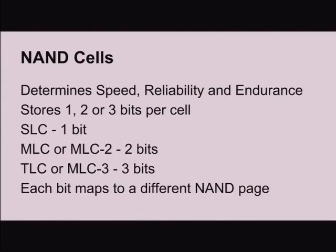NAND cells weren't on the hierarchy chart because you can store one, two, or three bits of data per cell. You might think those bits are all contiguous in the same page, but NAND storage vendors prefer to program all the bits for the first page first, then all the bits for the second page, and so on. So they wind up mapping to different NAND pages. One implication of this is that some pages read faster than others.